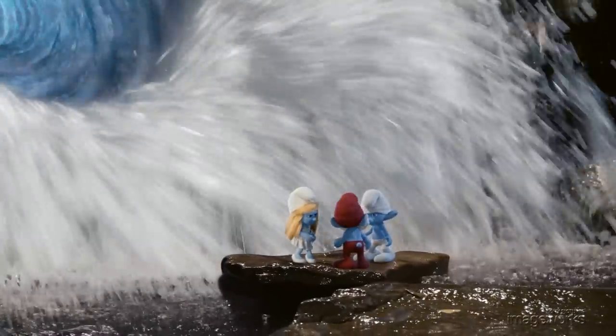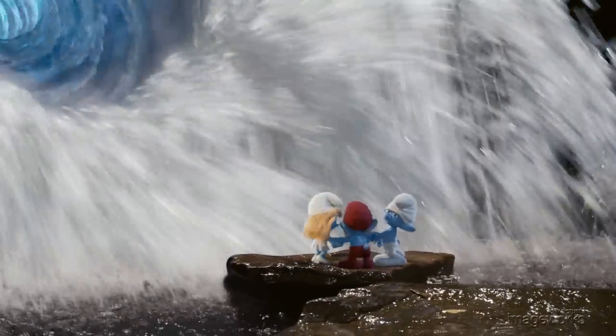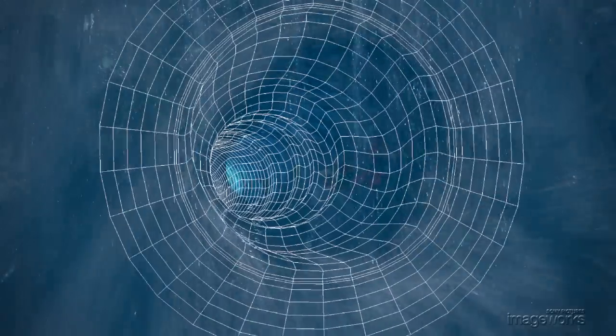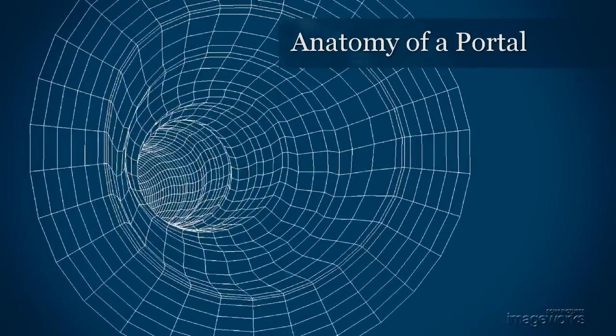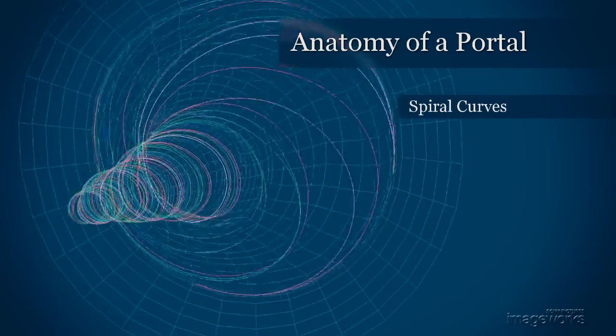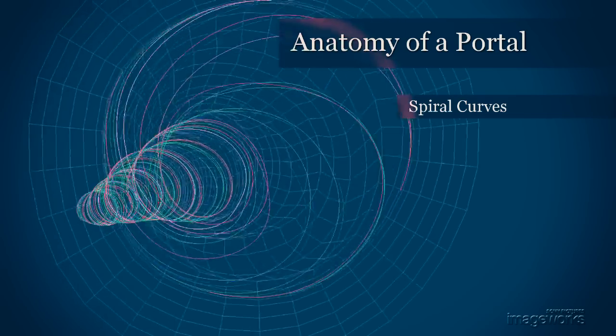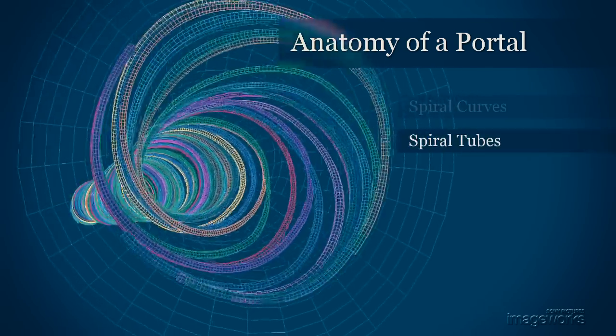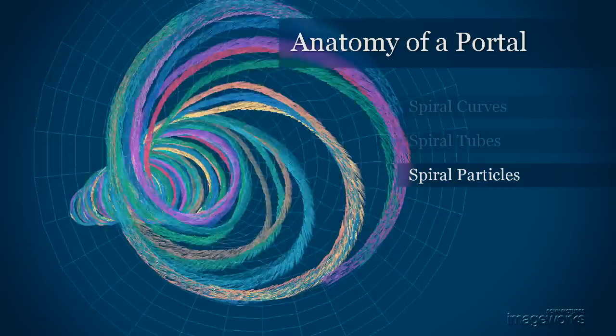Here we see a clip from Smurfs showing Smurfette, Hoppe, and Clumsy going home through a magical portal. The portal is an animated tube made of water that is spinning horizontally, something that normally occurs vertically.